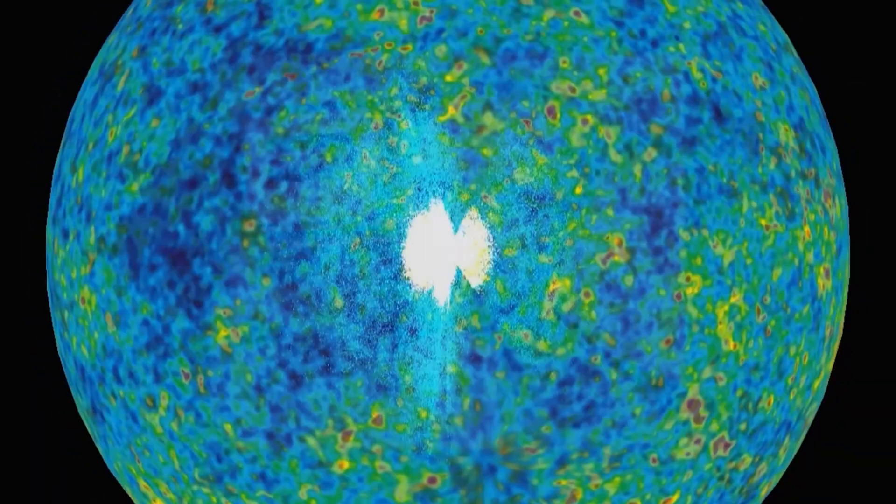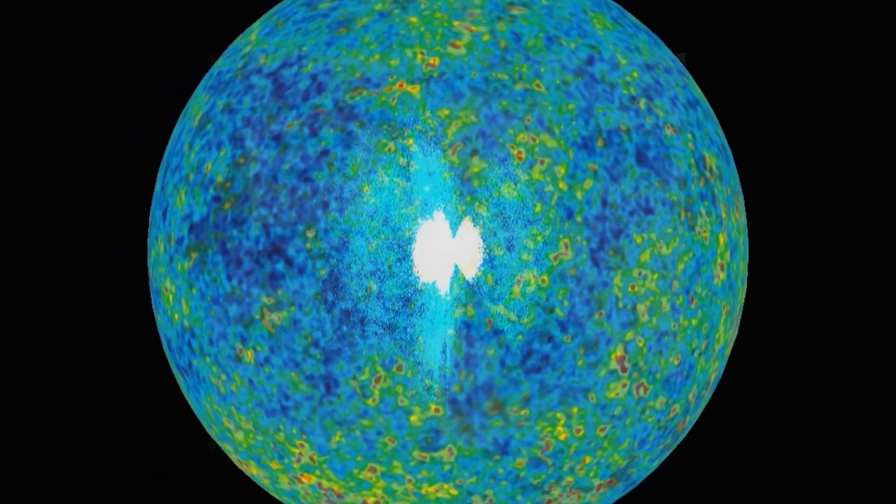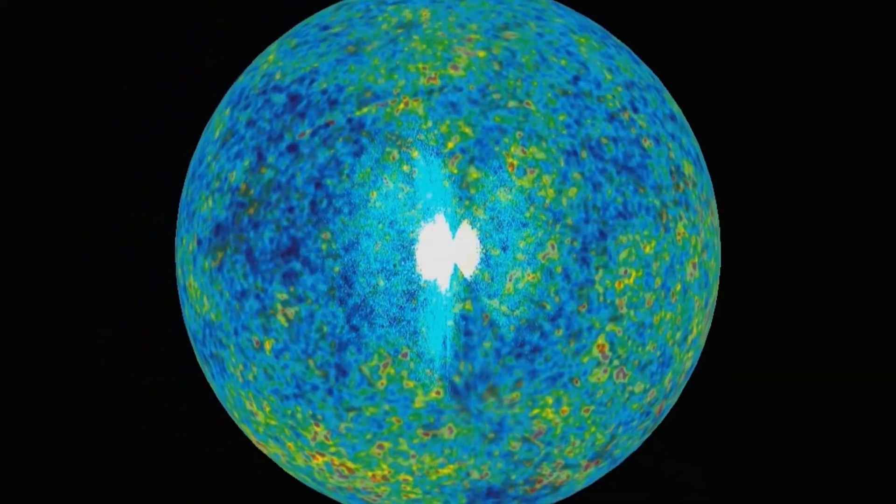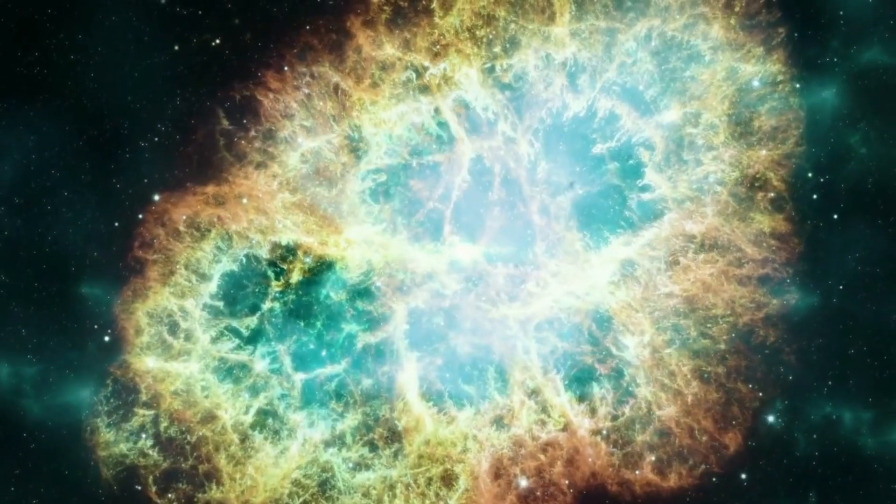The nebula in question is still expanding unceasingly, expanding by almost 900 miles per second. The center of the Crab Nebula is the pulsar that was created in the course of the supernova.